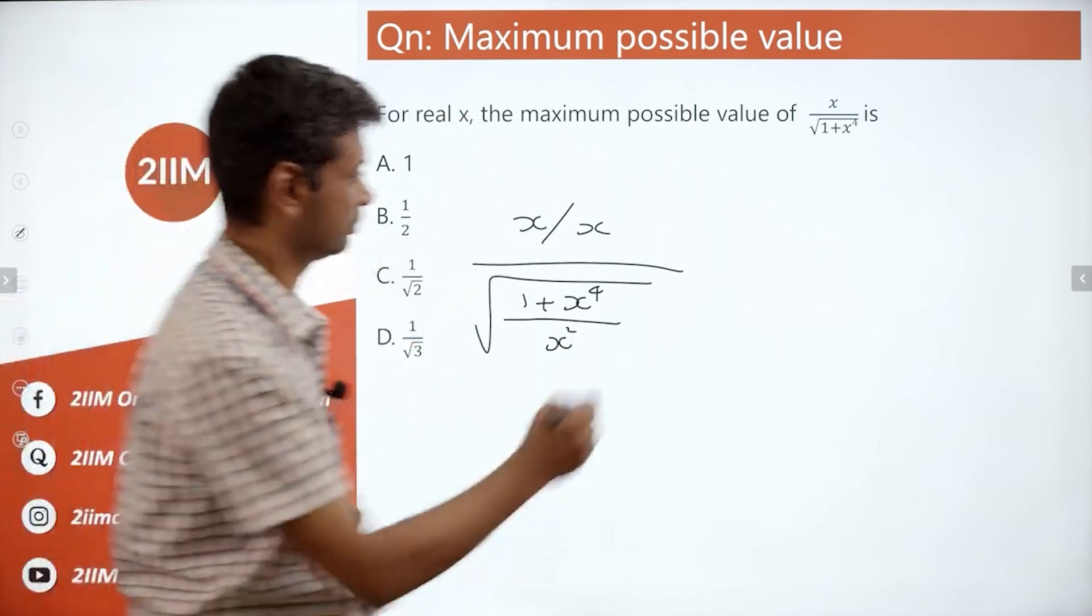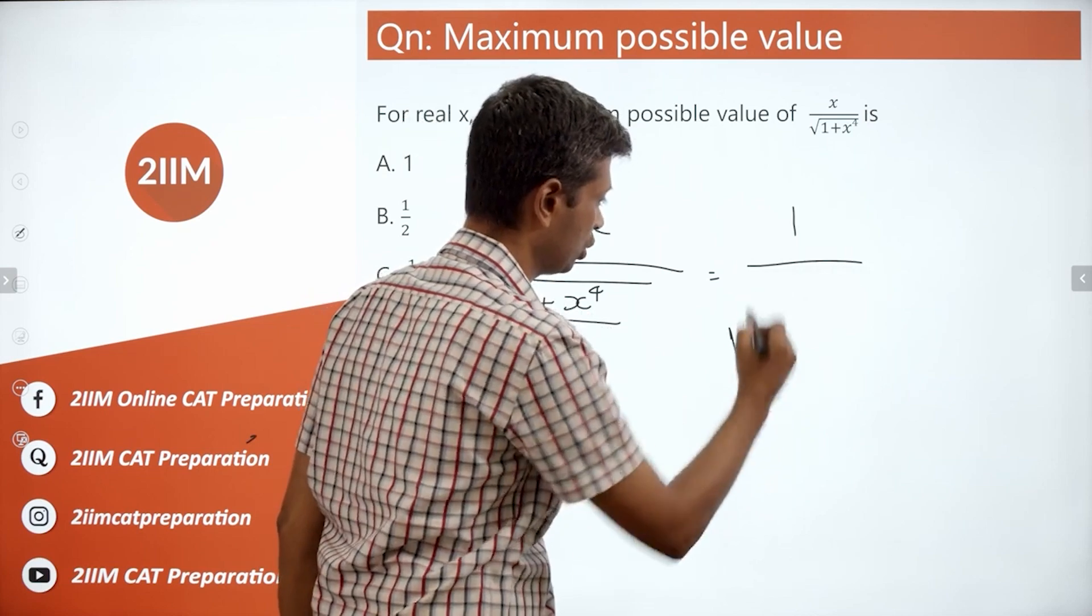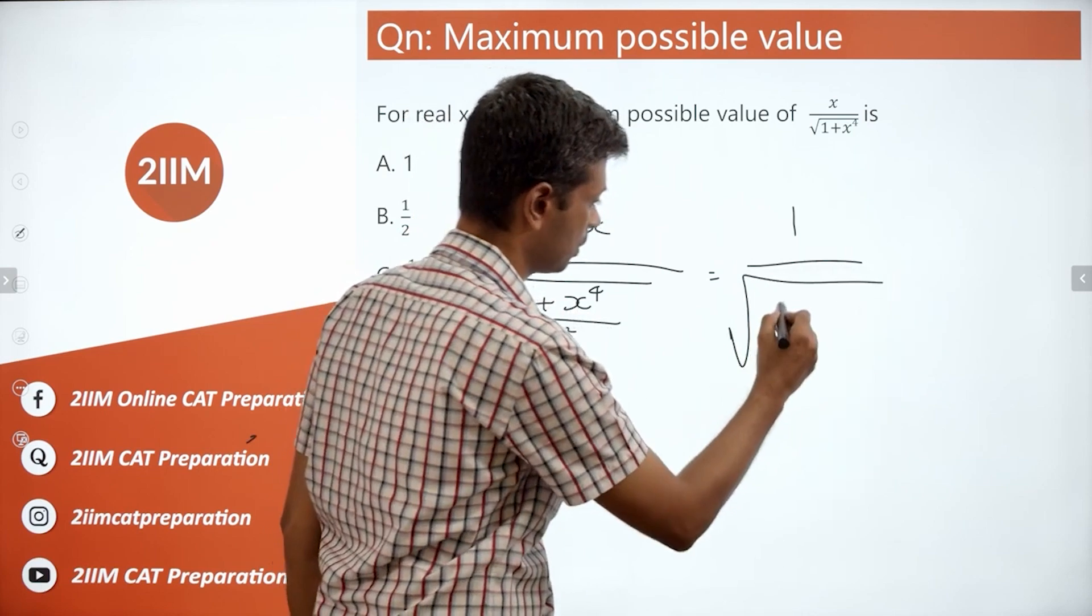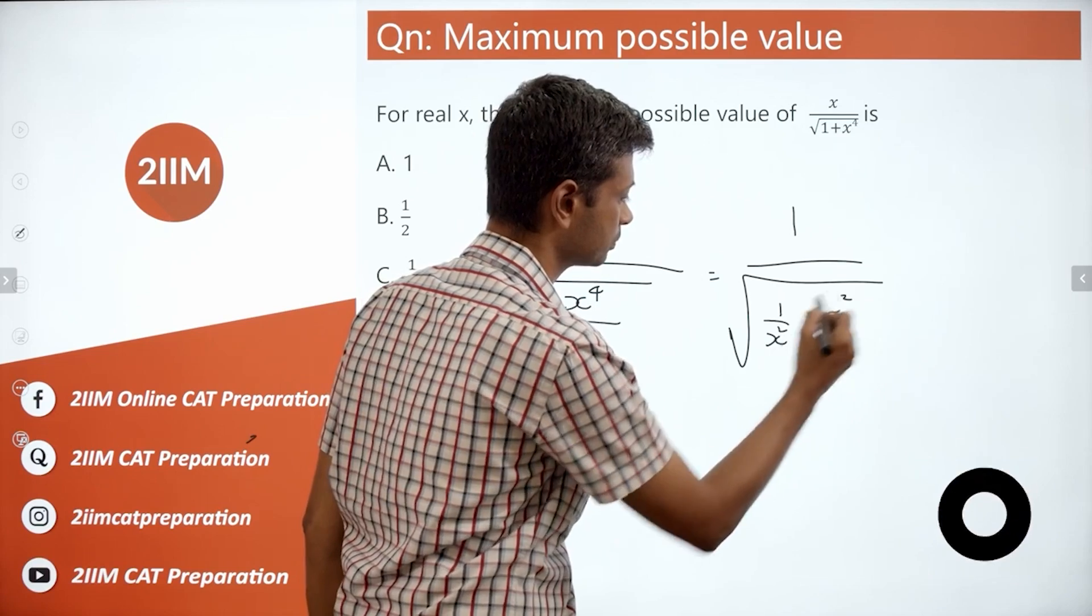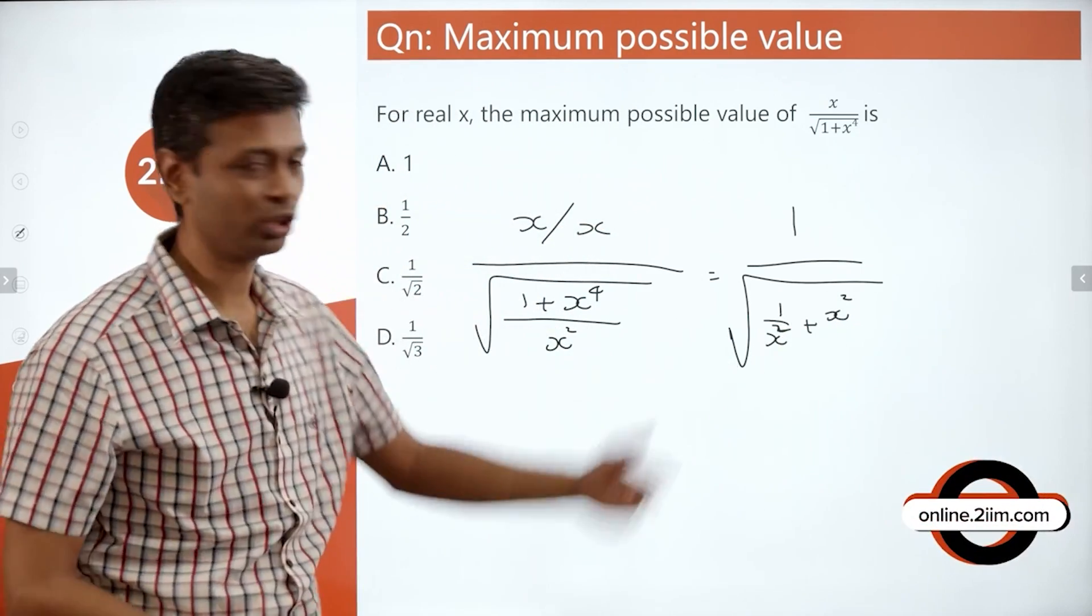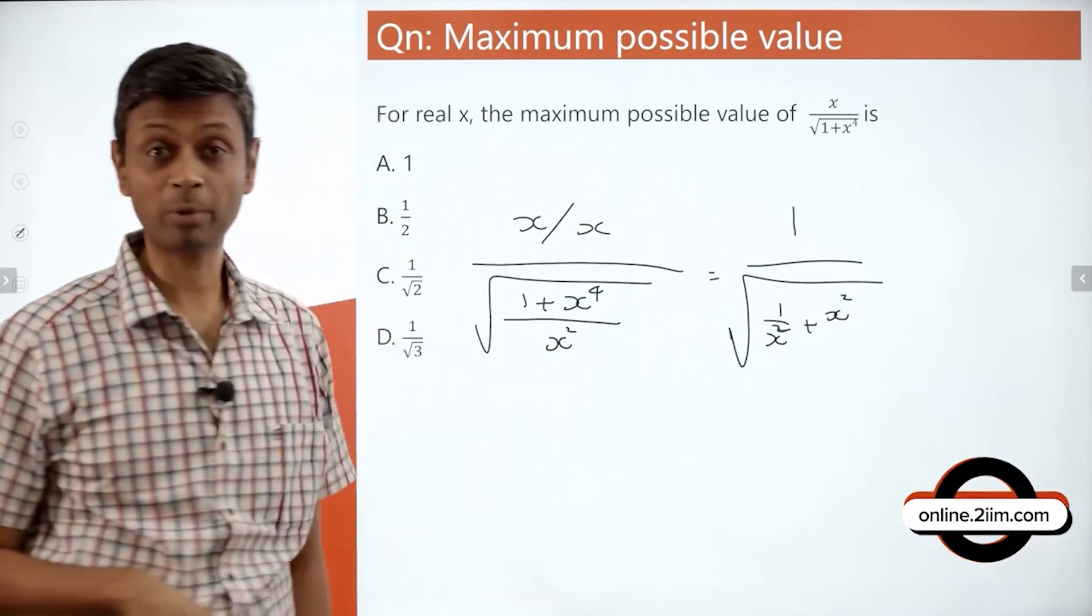x by x is 1, 1 by square root of 1 by x square plus x square. Lovely. Once you do this, you are through. You have already seen this in a couple of questions.